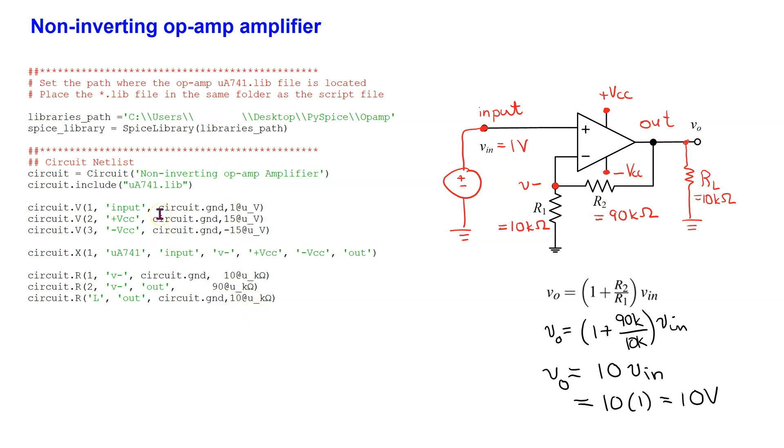We specify the file that includes the op-amp model. This lib file should be placed in the same folder as the Python script file. We can then specify this path in the script file, as shown here. This ensures that there are no errors associated with the model not being found.